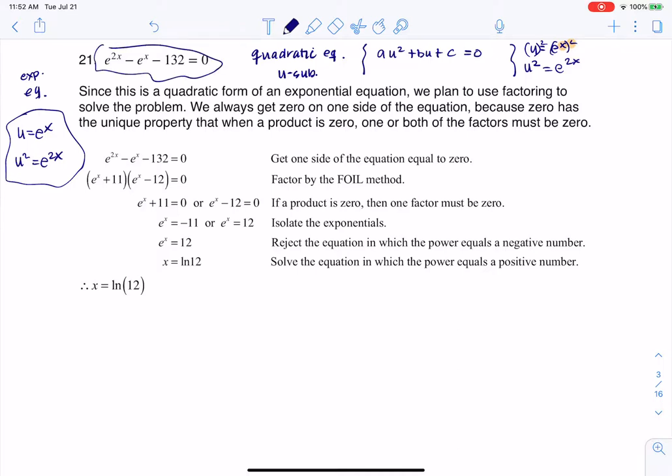I'm just going to rewrite that all down here, just so we have it. So we have e to the 2x minus e to the x minus 132 is equal to 0, and we also have our little u-sub. We know that u is equal to e to the x, and we know u squared is equal to e to the 2x.